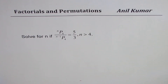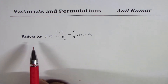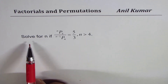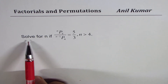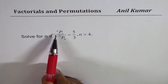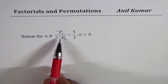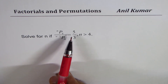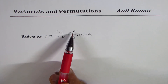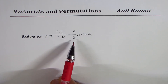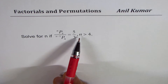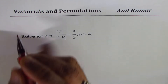I am Anil Kumar. We are trying to practice factorials and permutations. We have a question here to solve. We need to solve for n if nP4 divided by (n-1)P4 equals 5 over 3, where n is greater than 4.